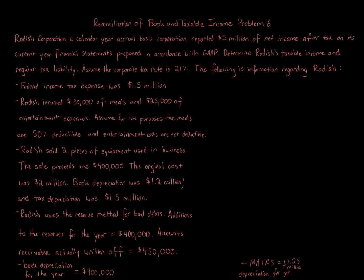Reconciliation of Book and Taxable Income Problem 6. Radish Corporation, a calendar year accrual basis corporation, reported $5 million of net income after tax on its current year financial statements prepared in accordance with GAAP. Determine Radish's taxable income and regular tax liability. Assume the corporate tax rate is 21%.